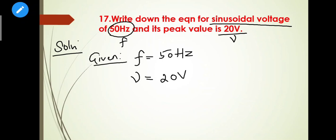The formula is v = Vm sin(ωt). We need to substitute omega in terms of frequency. Omega equals 2πf.